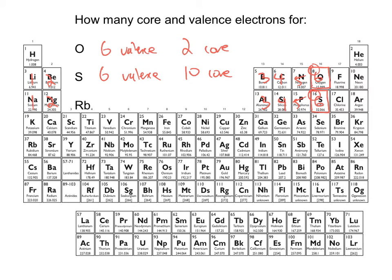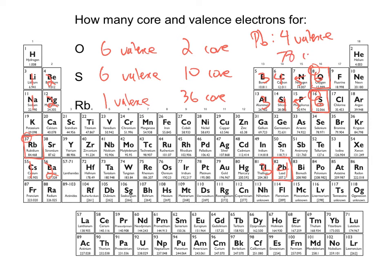Rubidium is here, so rubidium would only have one valence electron. 37 minus one means it has 36 core electrons. For lead: one, two, skip the d's and f's, three, four — so lead has four valence electrons. 82 minus four means it has 78 core electrons.